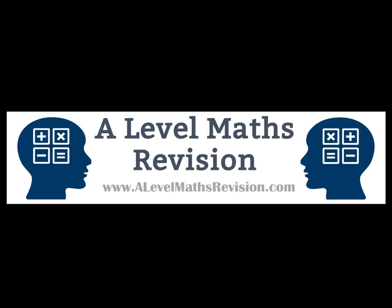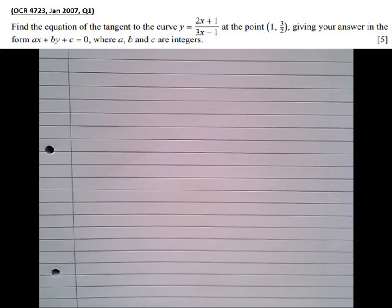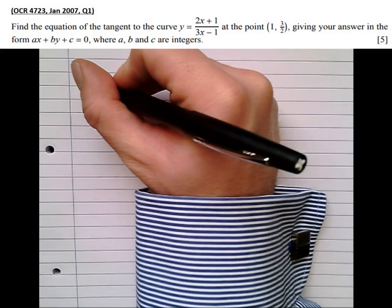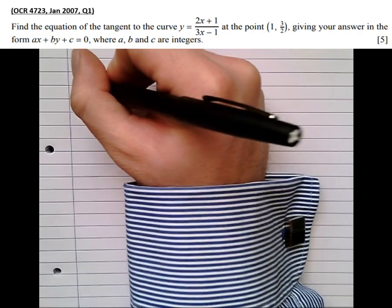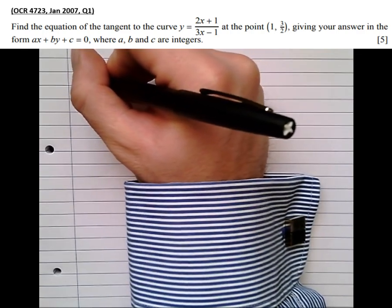In this tutorial video we're going to have a look at the quotient rule for differentiating a function. So first of all, what is a quotient? Well, a quotient is a function of the form u over v that we want to differentiate. So it's a fraction involving two functions.